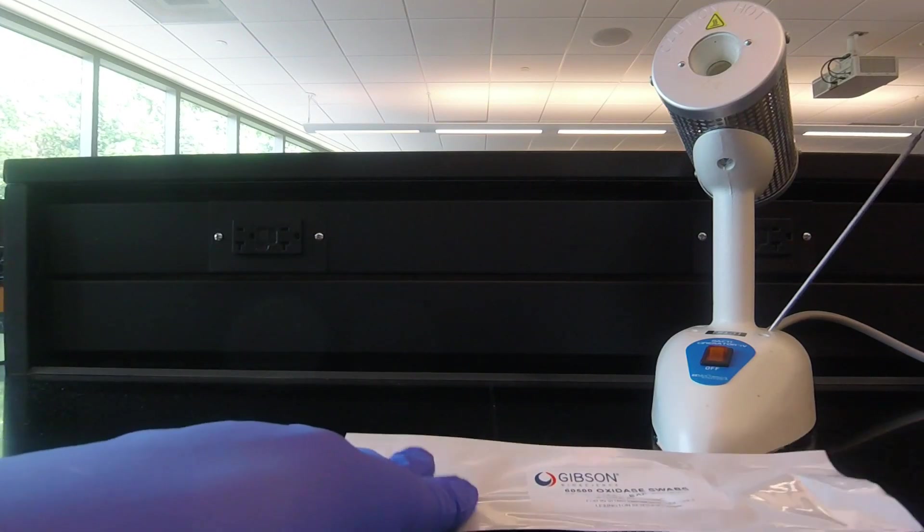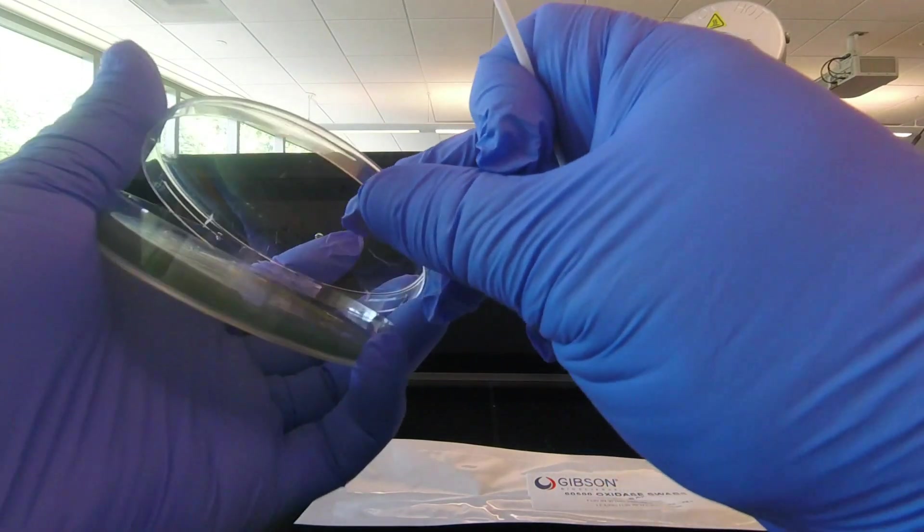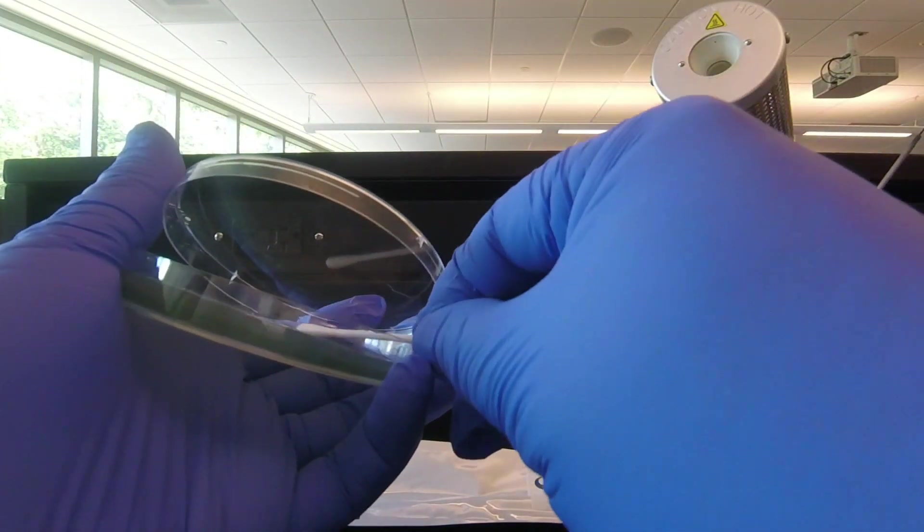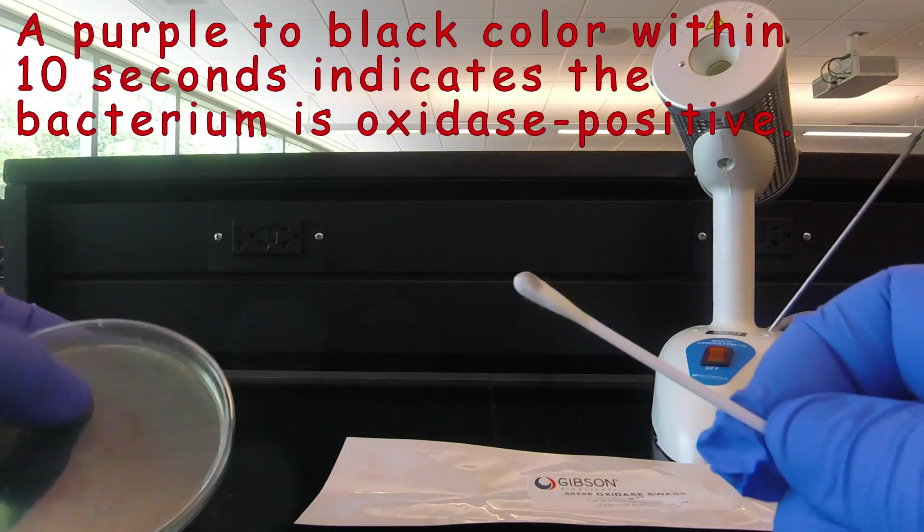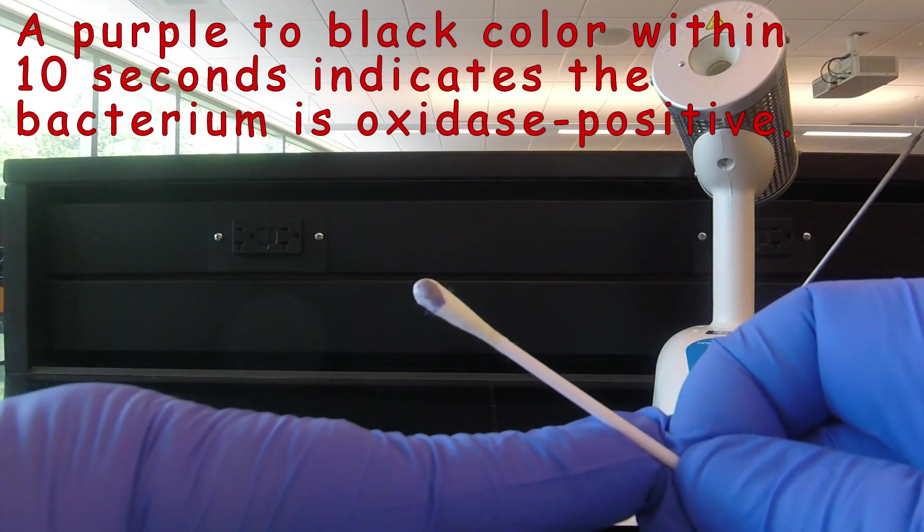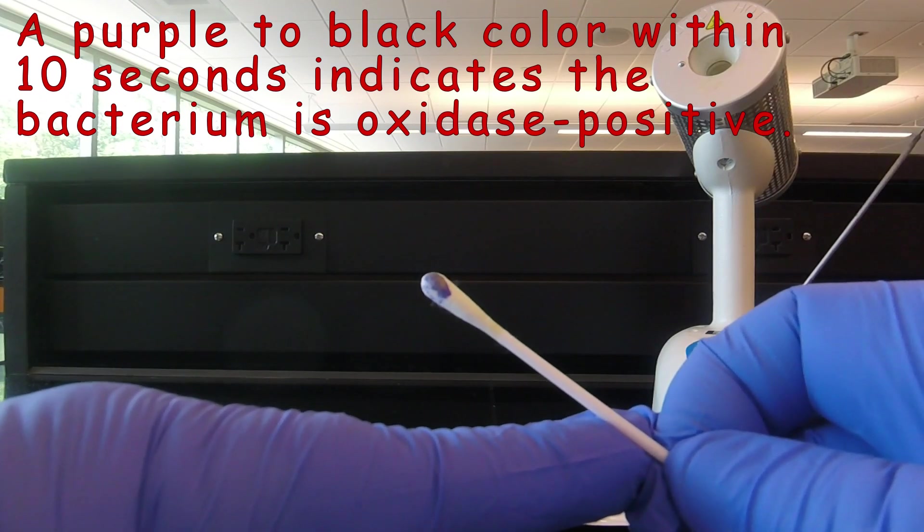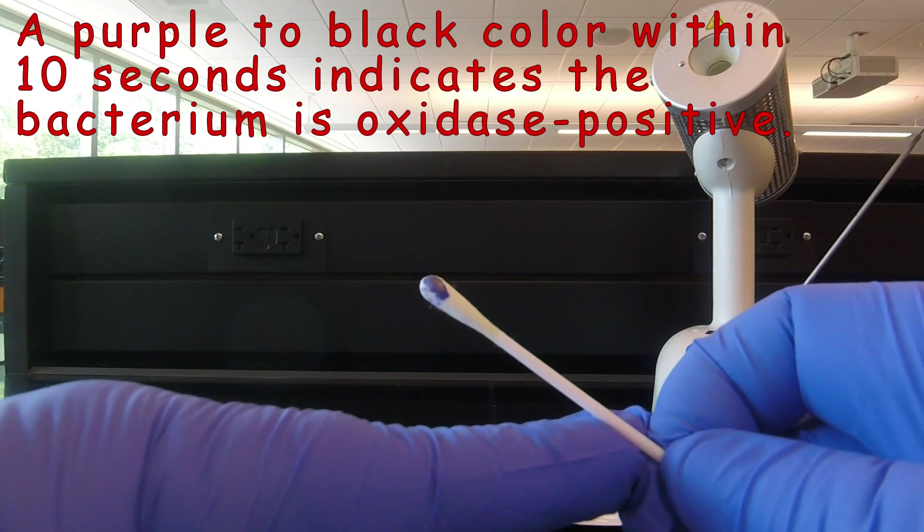We simply remove the oxidase swab from the package and scrape off a little bit of bacteria. We look for a color change on the swab within 10 seconds. As we see here, the swab is turning a dark purple to black color, indicating it's oxidase positive.